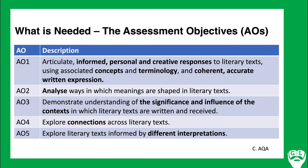Assessment objective two is analysis — this idea of ways meanings are shaped in literary texts, analysing the way meaning can be shaped in many different ways. Assessment objective three looks at the significance and influence of context in which literary texts are written. One big warning: AO3 is not a history lesson. Some of the weaker responses go very heavy on AO3, and there really is no need. Context should inform the essay — it shouldn't be the essay itself.